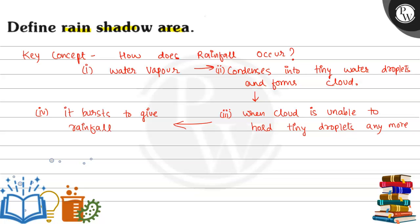Under the force of gravity, the tiny droplets fall as rainfall. So first step is water vapor through evaporation, second step is condensation when cloud forms, third step is when the capacity of cloud is exceeded and it becomes saturated, it bursts to give rainfall.